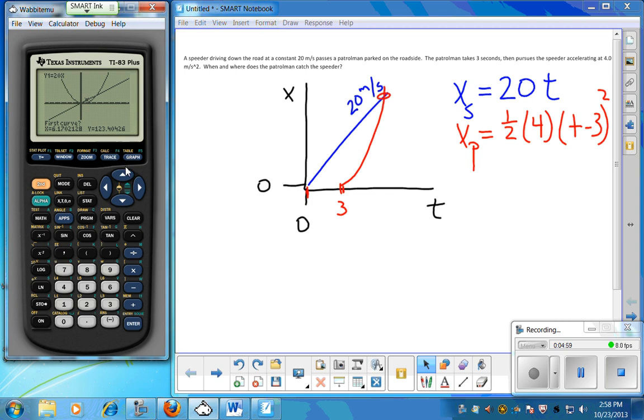It's going to ask you first curve, second curve, and guess. First curve, the cursor will be on one of your lines blinking. You just want to hit enter and say yes, this is the first one. Then it switches to the other one and you hit enter. If you don't have a whole bunch of equations in your calculator, if you only have two anyway, you can kind of just go enter, enter, because you know those are your two curves.